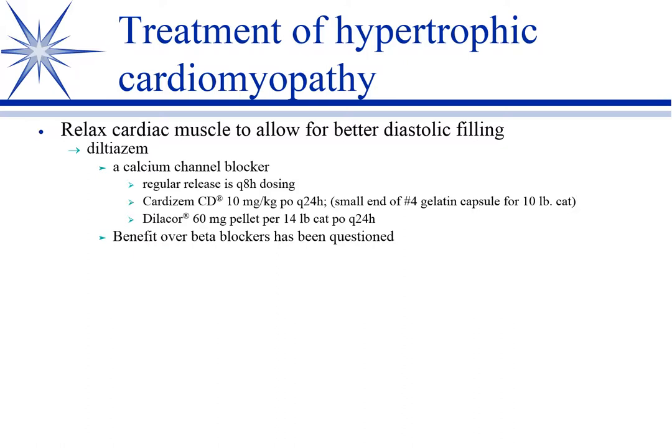Back to hypertrophic cardiomyopathy in cats. When they're in actual failure, you see pulmonary edema and respiratory signs - and I talked about oxygen, furosemide, and opioids. But in terms of actually treating the heart, this is totally different from systolic heart failure. What we're really trying to do is slow the heart rate to allow better diastolic filling and relax the heart muscle - that's called lucitropy. We use either diltiazem, a calcium channel blocker, or atenolol, a beta-1 selective blocker.